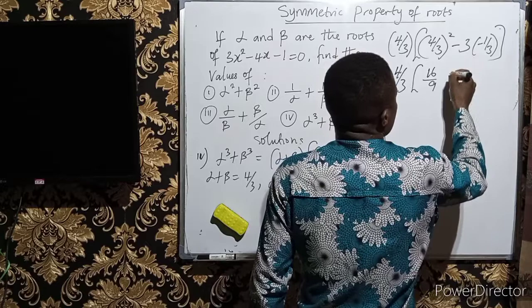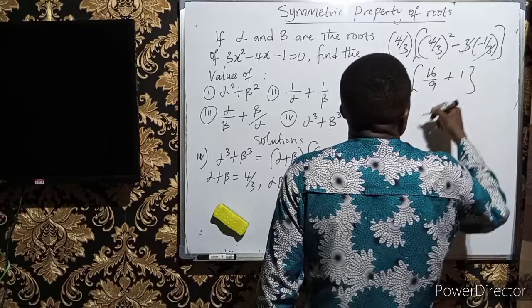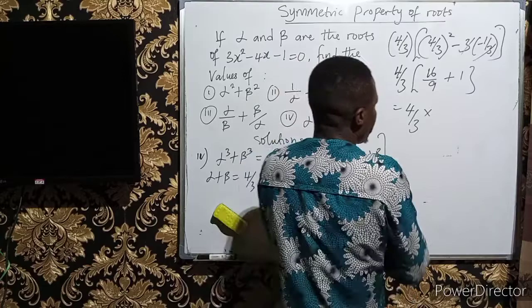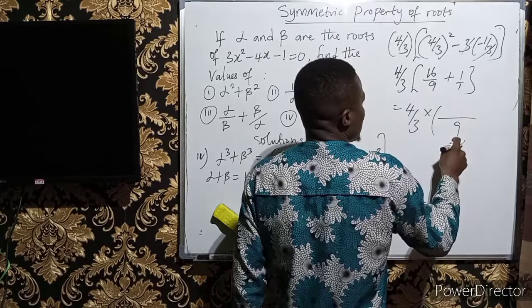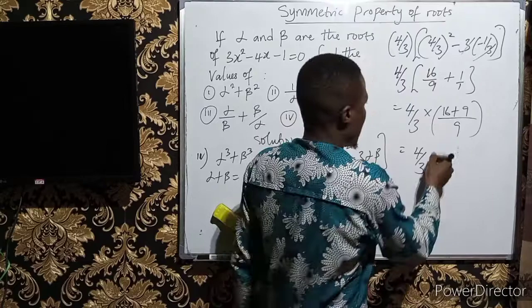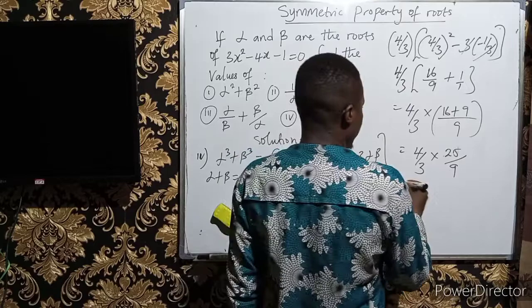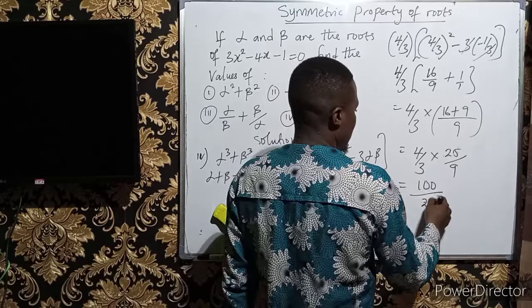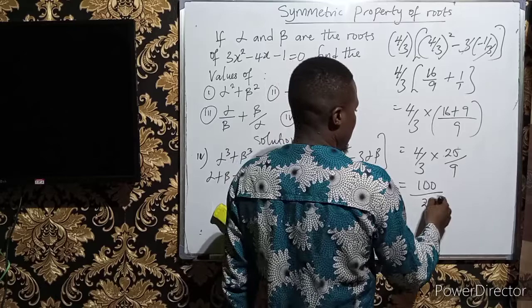This becomes 4 over 3 times 16 over 9 plus 1, since minus 3 times minus 1 over 3 gives plus 1. Using LCM of 9, the bracket becomes 16 over 9 plus 9 over 9, which is 25 over 9. So we have 4 over 3 times 25 over 9. Multiplying gives 100 over 27. You can convert this to a mixed fraction if you prefer — whichever form is your answer.